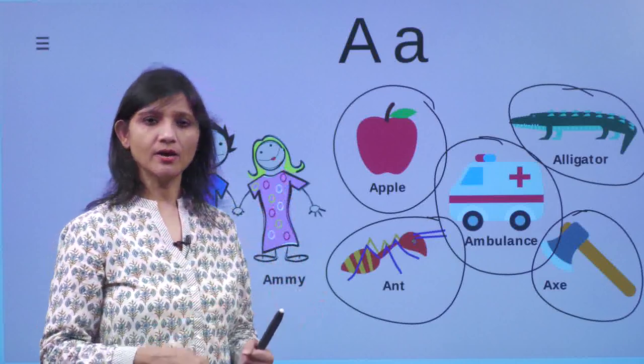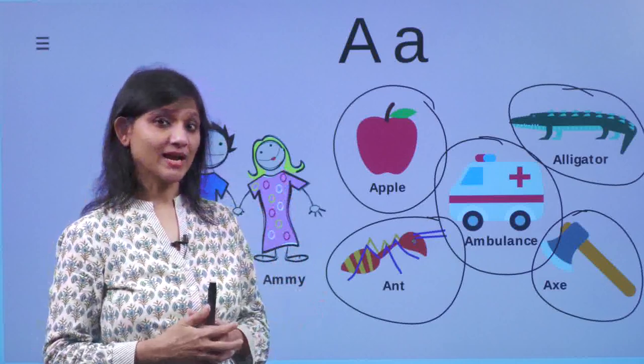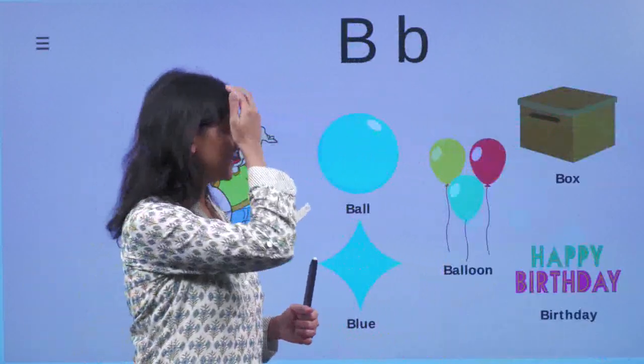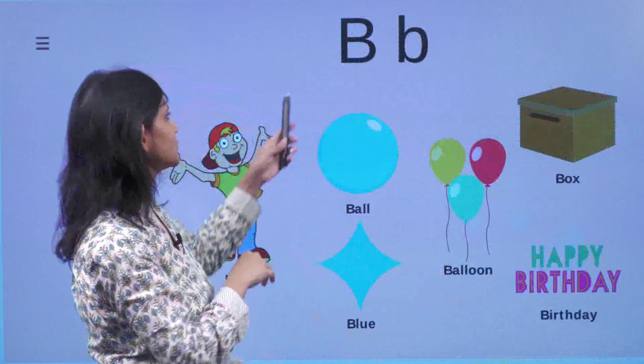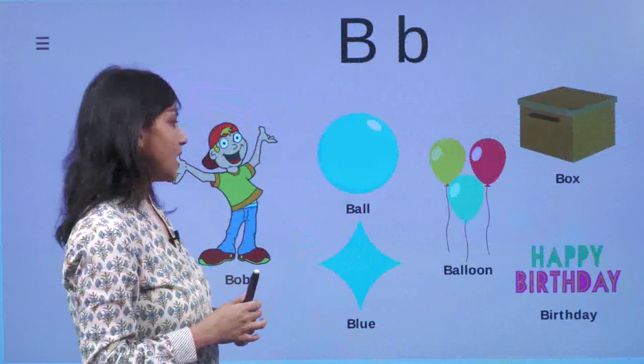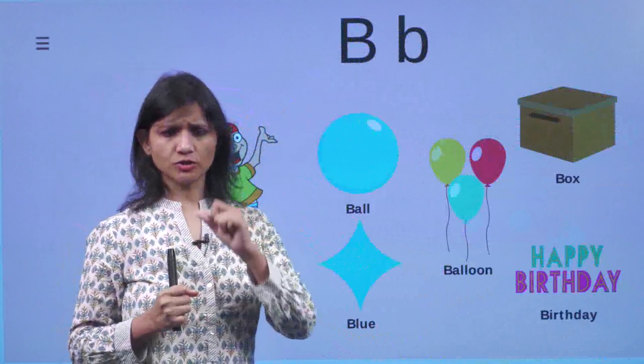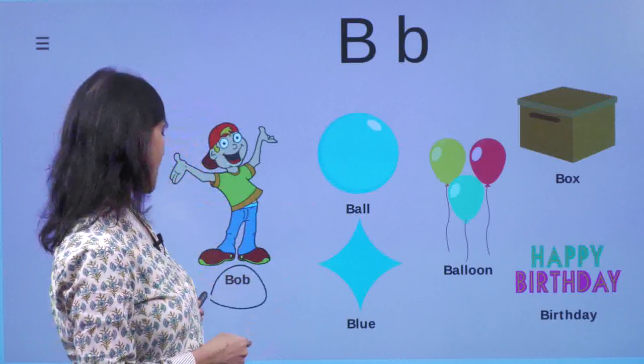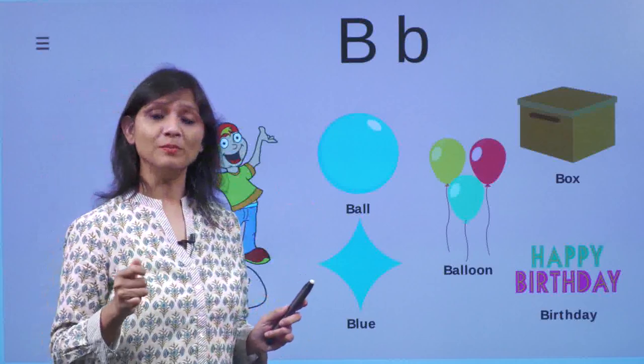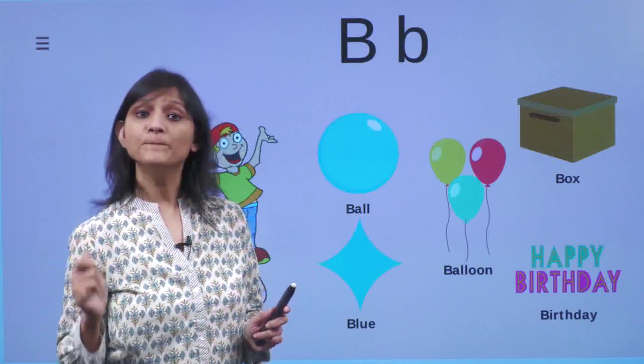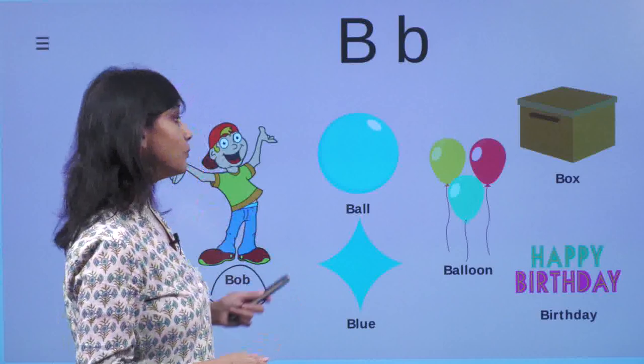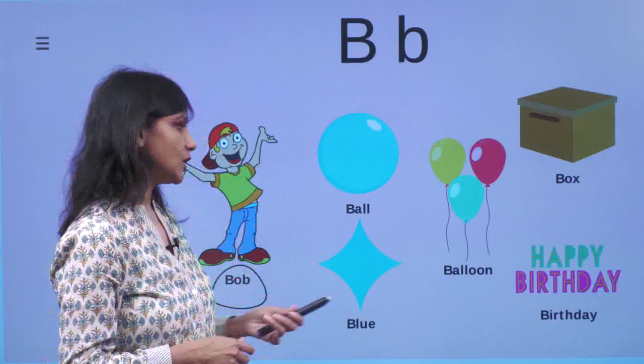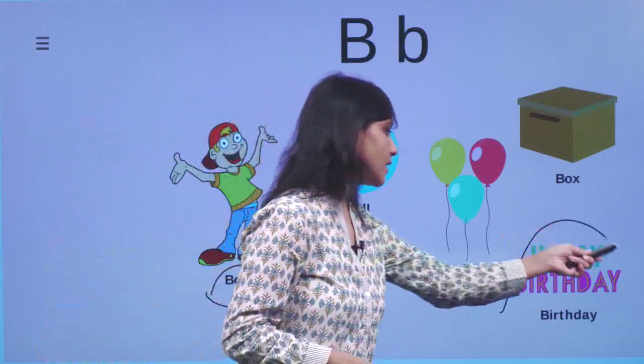Now let's look at our second friend. And the second friend's name is B. You see, small B and big B. Now another story, a short story on B. Can you see Bob here? It was Bob's birthday that day.